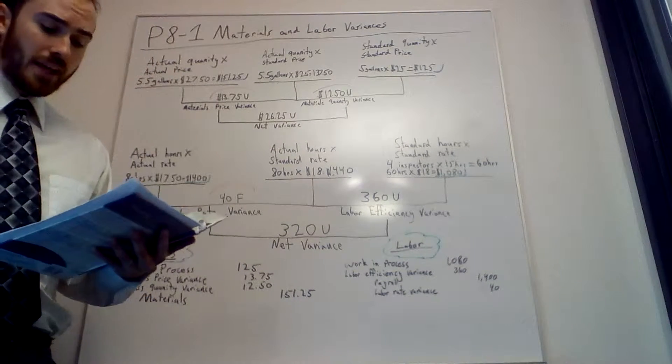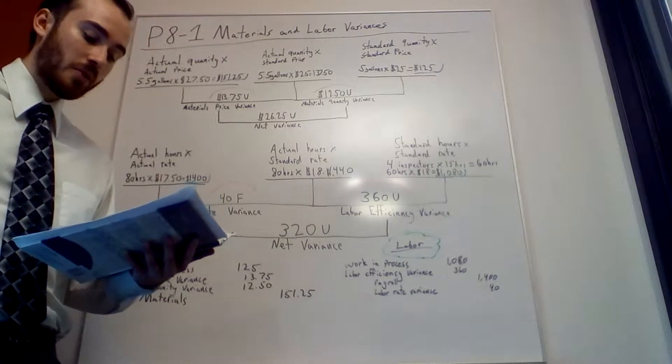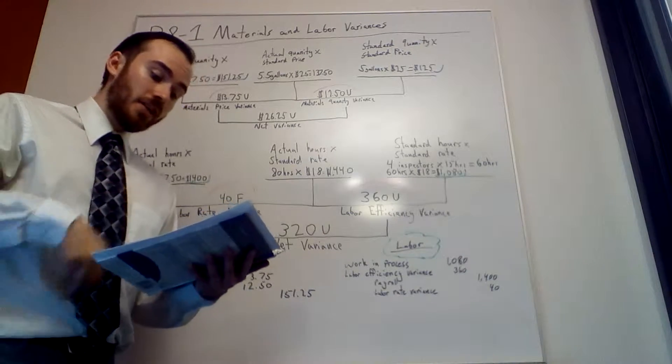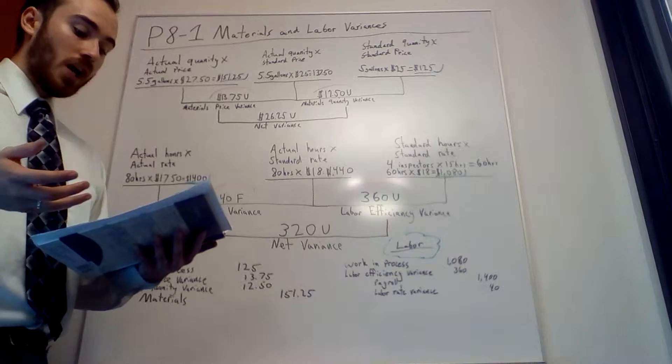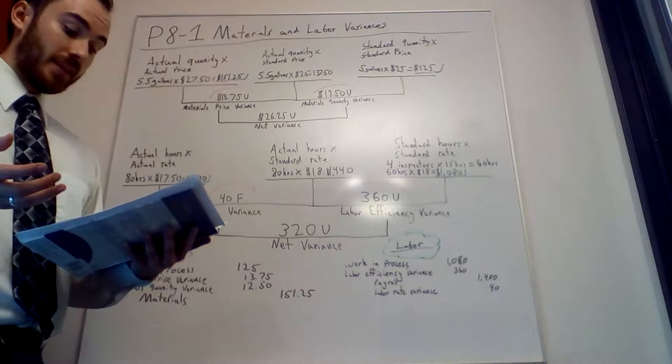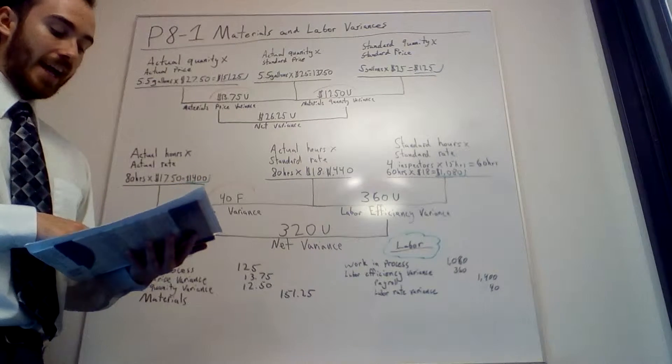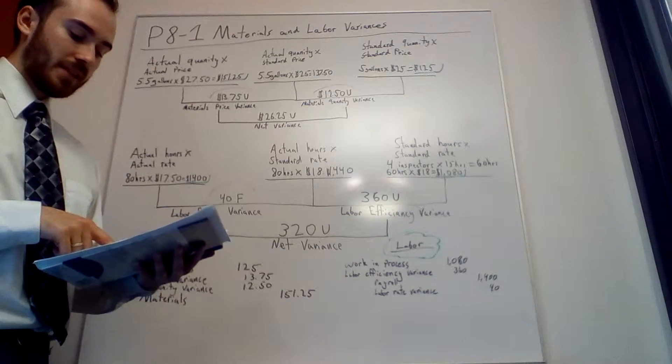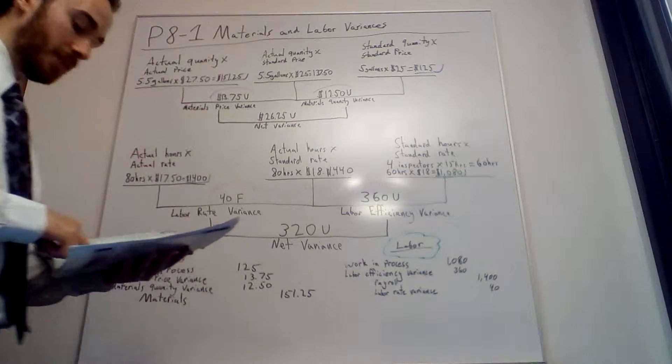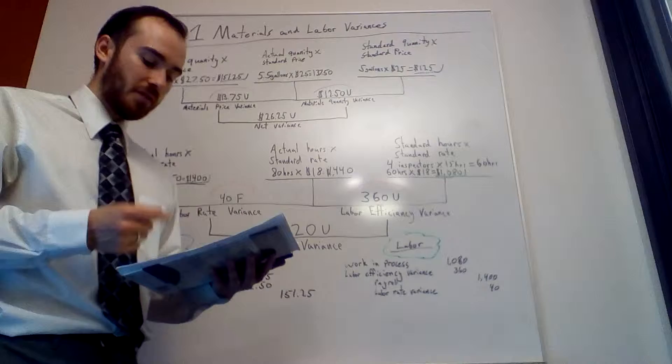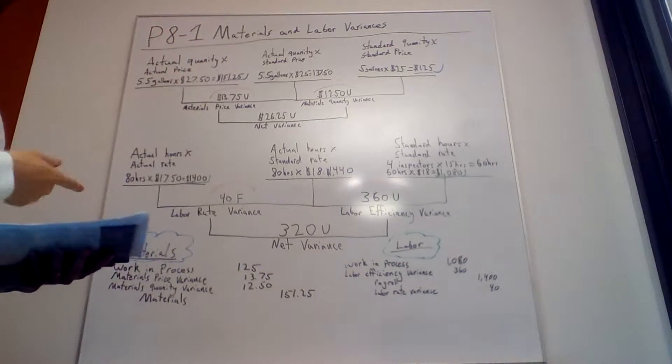Each job should take 15 hours for each of four inspectors who are paid $18 an hour. Each job uses five gallons of bright, a colored chemical, which should cost $25 per gallon. Data from the company's most recent job shows five men working 80 hours at $17.50. The problem asks for materials price and quantity variances and labor rate and efficiency variances.